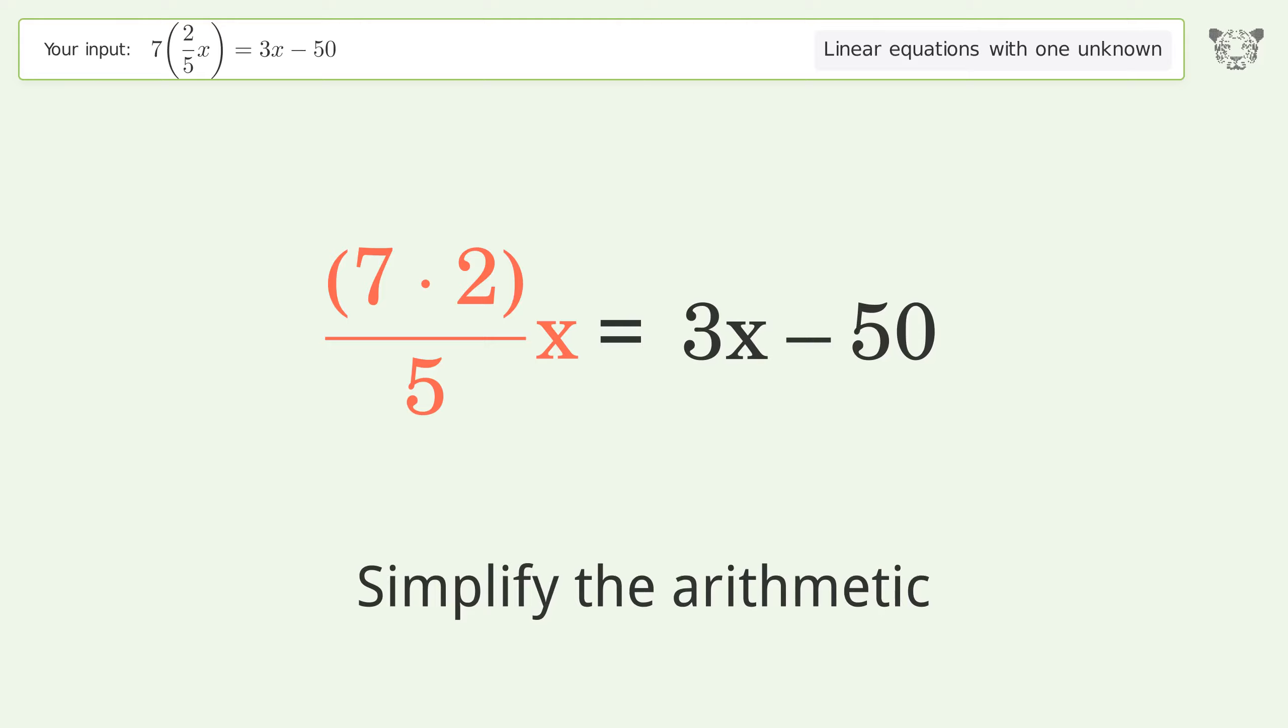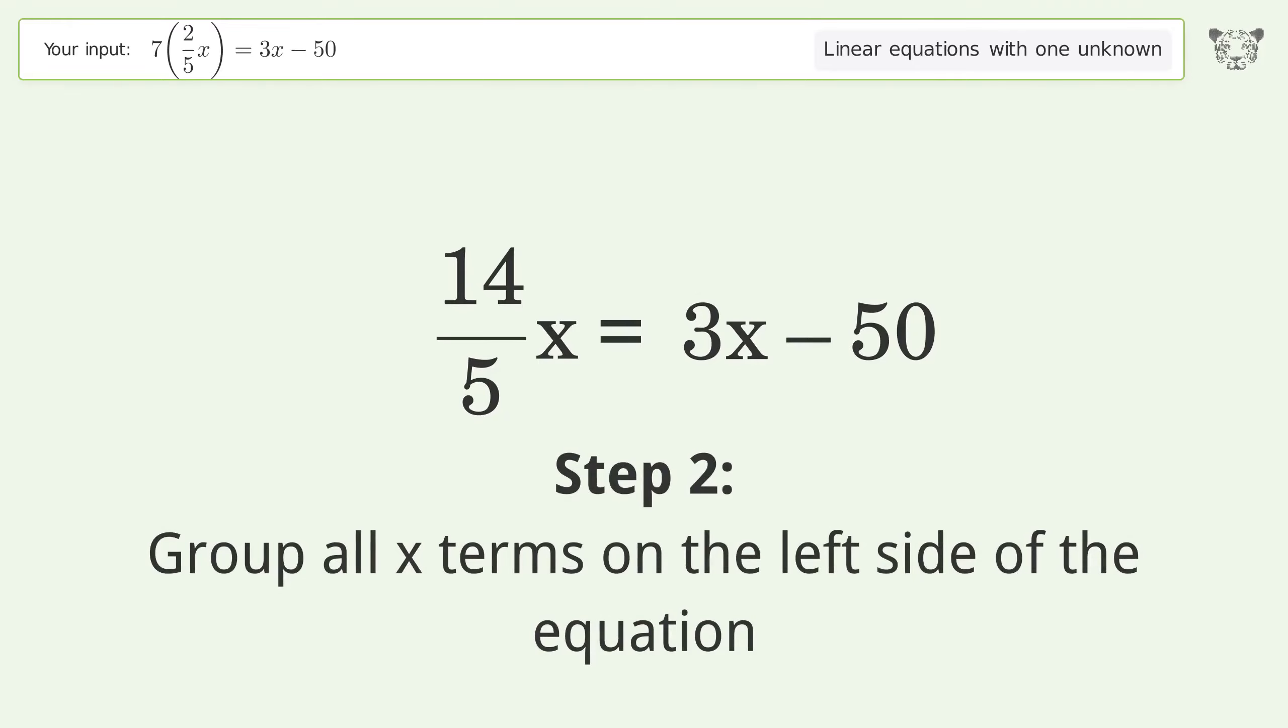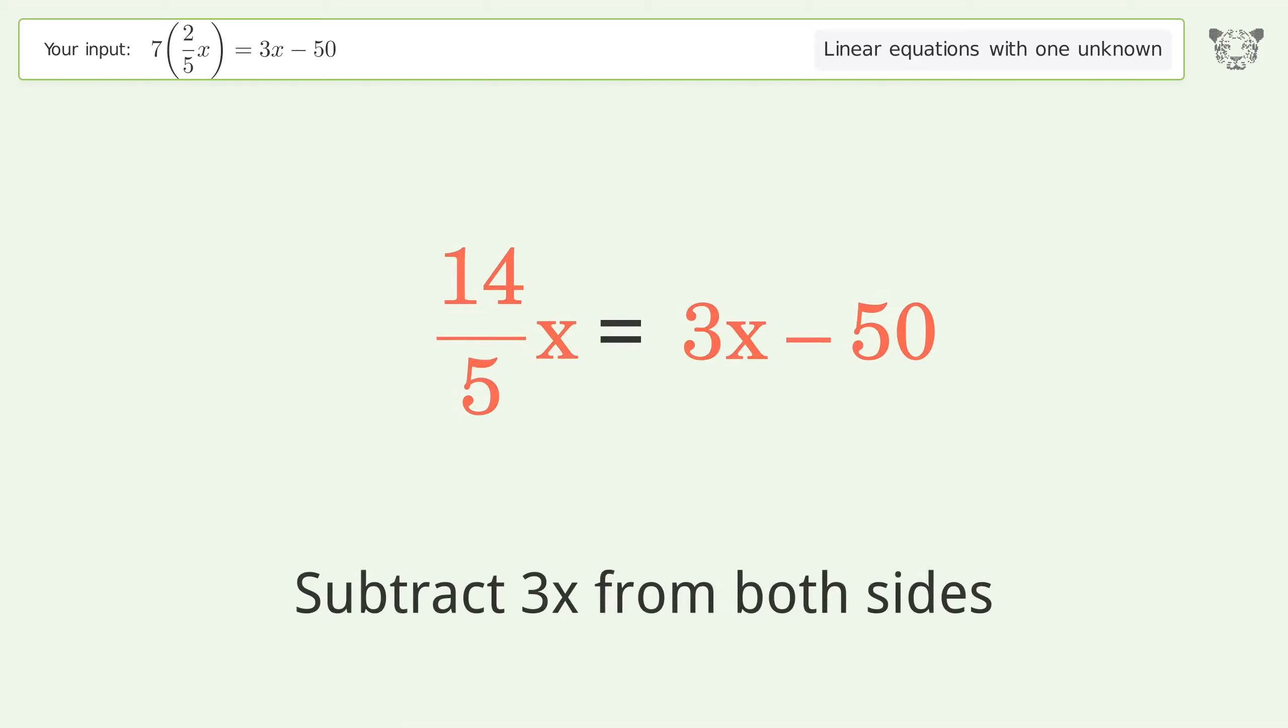Simplify the arithmetic. Group all x terms on the left side of the equation. Subtract 3x from both sides.